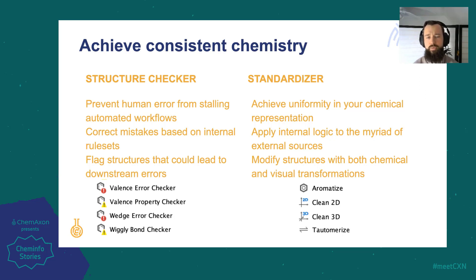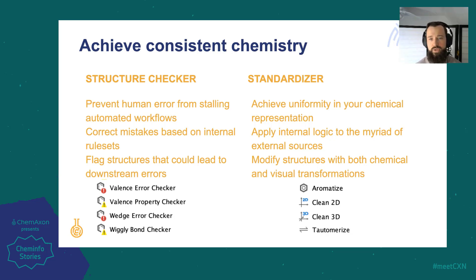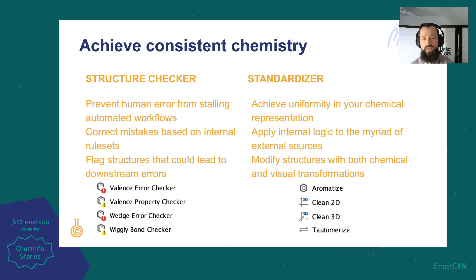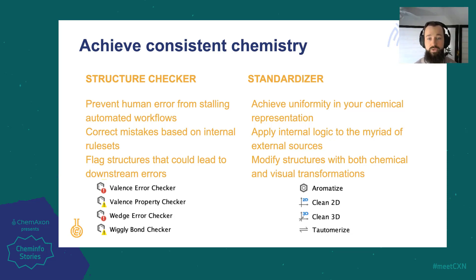Nowadays, chemical data files come from a near endless number of sources — public databases, legacy databases, CROs, academic collaborators, and more. With such a diversity of information sources, ensuring uniformity at the point of entry becomes extremely important and can easily be achieved using Standardizer and Structure Checker. Ensuring good data in data science and machine learning applications relies heavily on it being clean — they say 80% of a data scientist's time is spent cleaning data, and these tools could play a huge part in that. Both Structure Checker and Standardizer are available as desktop applications or as embedded toolkits.